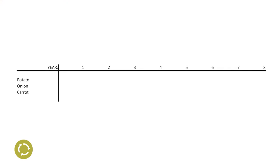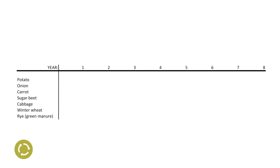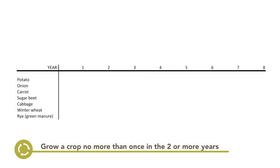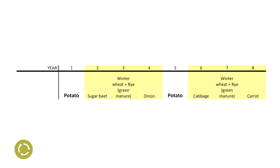Within this rotation, we grow potato two times, and the other crops are sugar beet, cabbage, and winter wheat, with rye as green manure crop. A general rule for the frequency is to grow a crop no more than once in two or more years. For many crops, however, a longer period is required. In this rotation, for example, the main crop potato is alternated by three sequences of other crops.